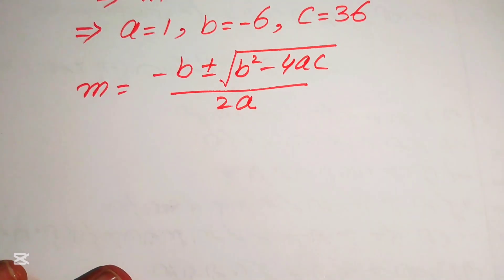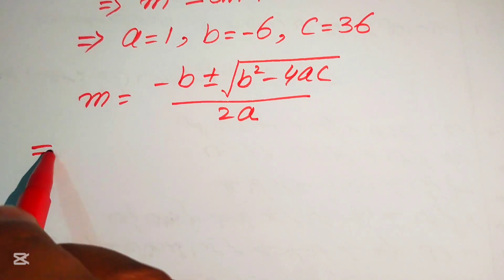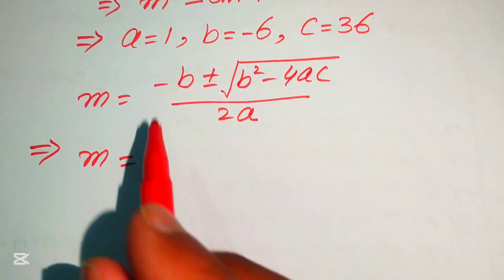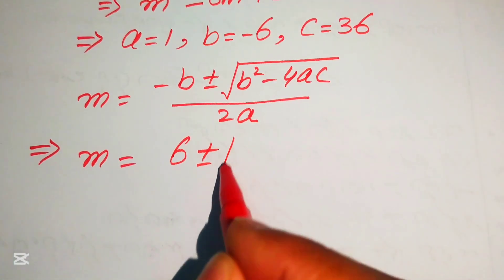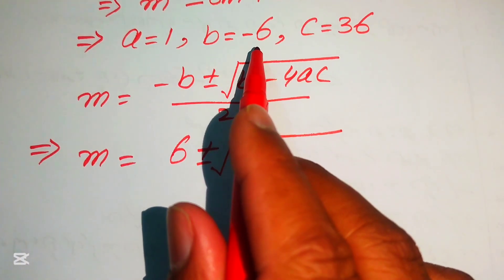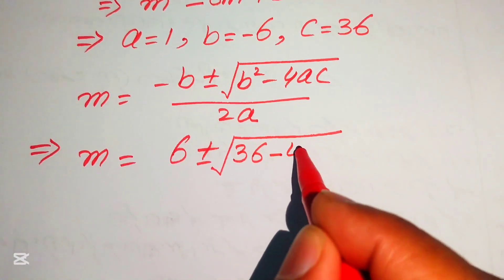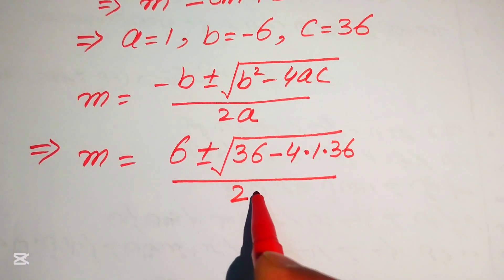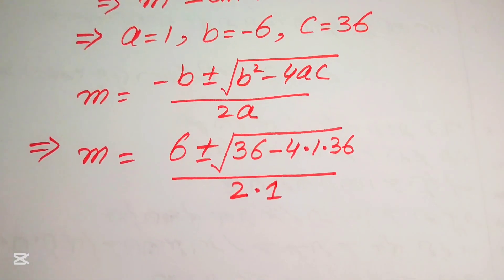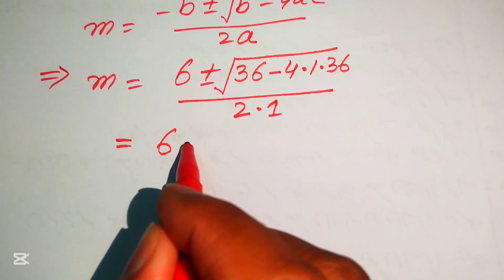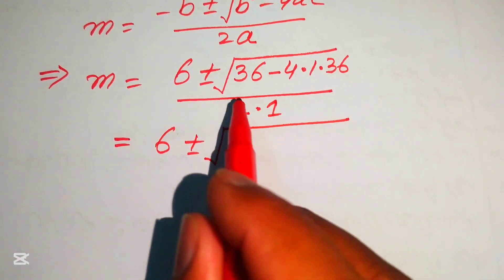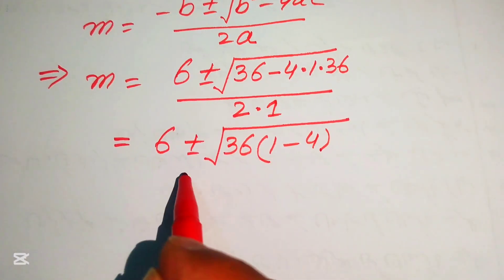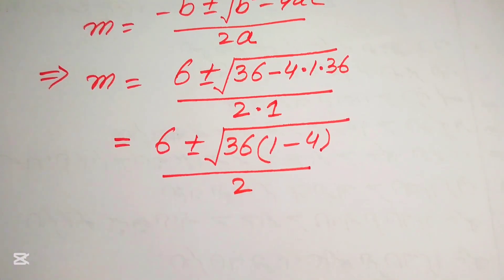Now we substitute the values of a, b, and c. The value of b is minus 6, so minus times minus becomes plus 6. Then plus or minus the square root of b squared: minus 6 squared equals 36, minus 4 times a which is 1, times c which is 36, all divided by 2 times a. Since a equals 1, the denominator is 2. In the next step we write this as 6 plus or minus the square root of 36 times the quantity in brackets, divided by 2.